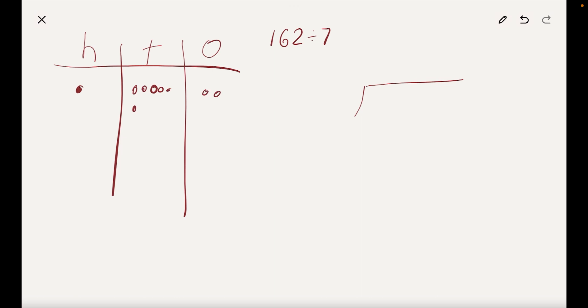So I'm going to draw it on the chart. 1 hundred, 6 tens, and 2 ones. And over here it's 162. I'm dividing it by 7. Now when you divide by 7, it's the same thing as you're making groups of 7. How many groups of 7 can I make?